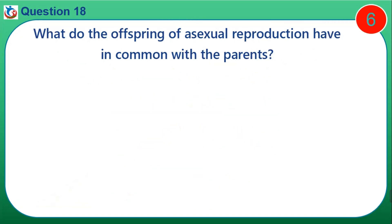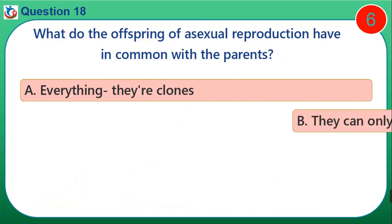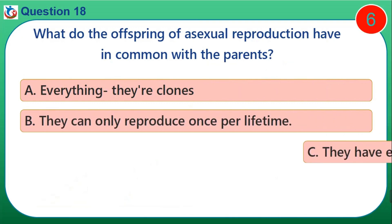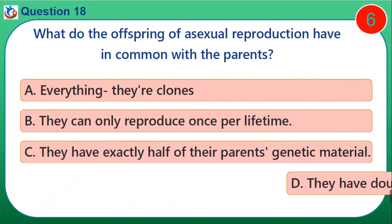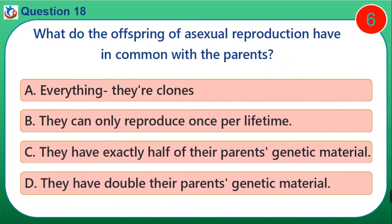Question 18. What do the offspring of asexual reproduction have in common with the parents? A. Everything — they are clones. B. They can only reproduce once per lifetime. C. They have exactly half of their parents' genetic material. D. They have double their parents' genetic material.